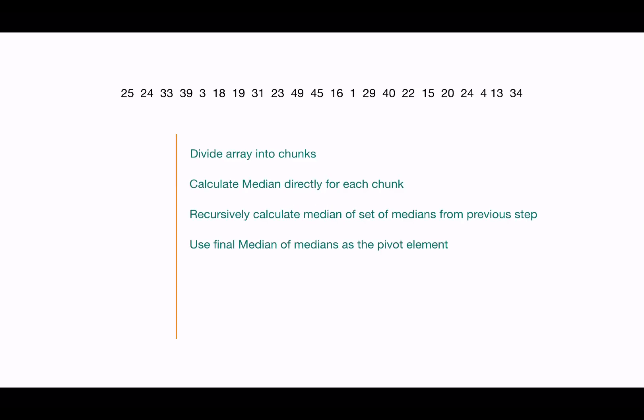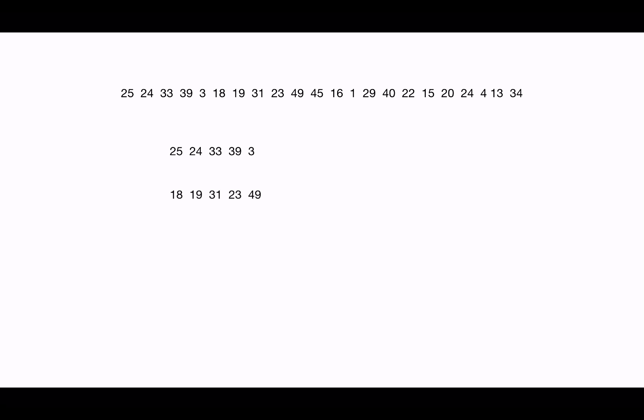In that way, complexity becomes O(n). Let's see how. In the Median of Medians algorithm, we divide the array into subarrays each of length 5, where the last subarray may have length less than 5. Then we find the median of each subarray directly, recursively determine the median of the set of all these medians, and then use that final median as the pivot.